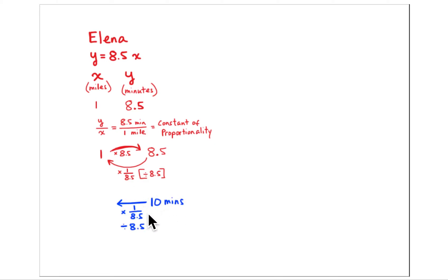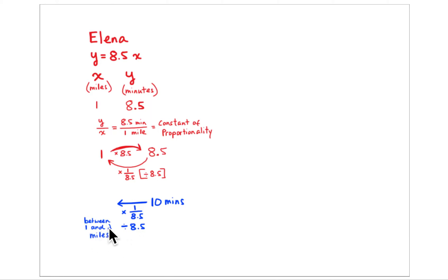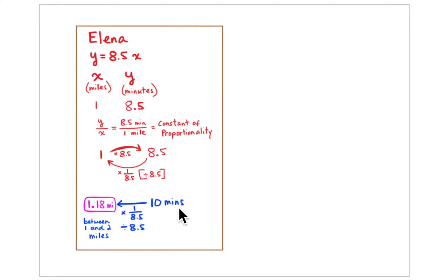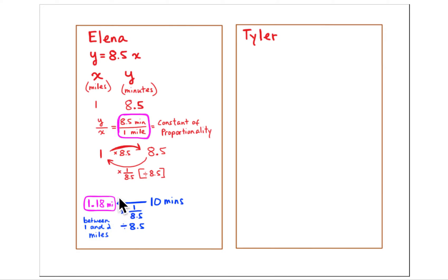Taking 10 minutes and dividing by eight and five-tenths gives an answer between one and two miles. The result is one and eighteen-hundredths miles — that's how far Elena runs in 10 minutes. Her pace is eight and a half minutes per mile.